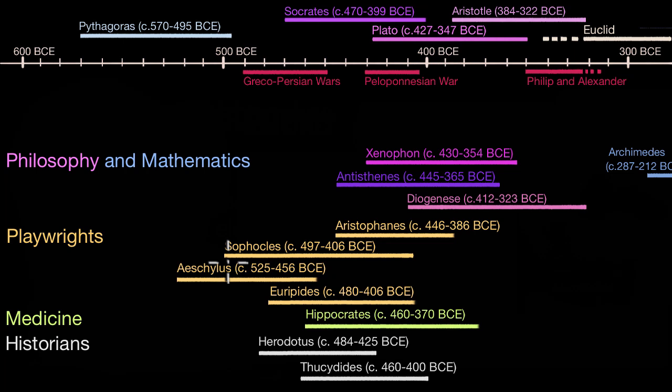When you see this density of arts, sciences, and learning in one place — a lot of this was centered in Athens — it makes you wonder what was going on at that time. Historians do call the period from when the Athenians were able to fend off the Persians all the way until the end of the Peloponnesian War the golden age of Athens, and for good reason. Look at this flourishing of the arts and sciences that developed during that period.